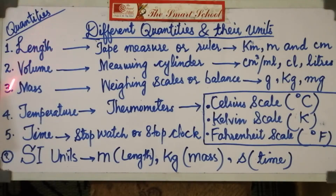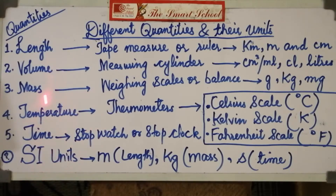After discussing all these quantities, measuring instruments, and their units, we must also know what SI units are. SI stands for Système International units. The standard units used for measurements are called SI units. For example, the SI unit of length is the meter, the SI unit of mass is the kilogram, and the SI unit of time is the second.